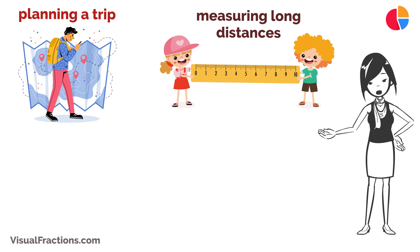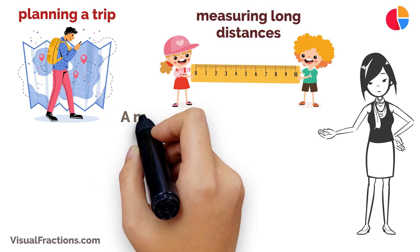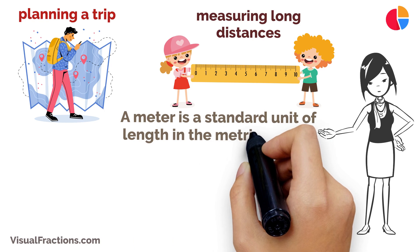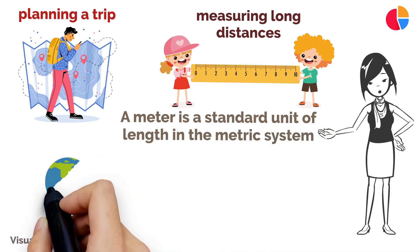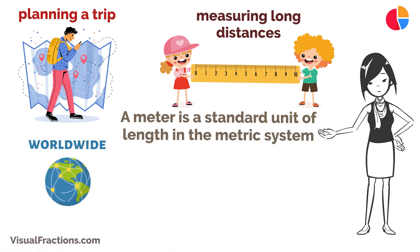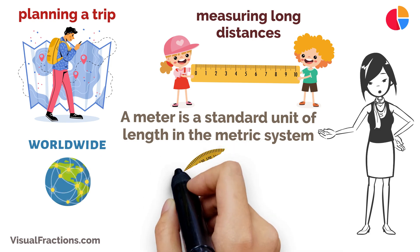Let's start with the basics. A meter is a standard unit of length in the metric system and is widely used worldwide. A kilometer, which is also a metric unit, represents a much larger distance.